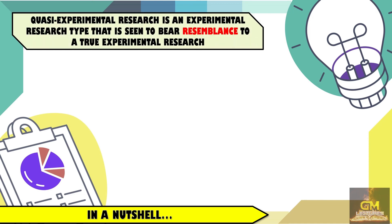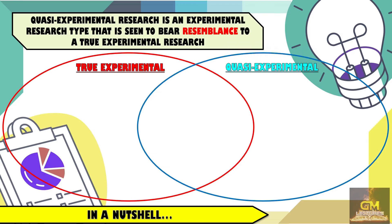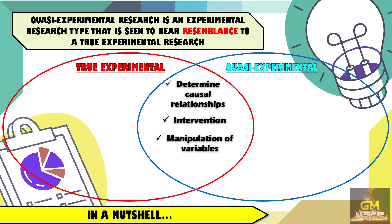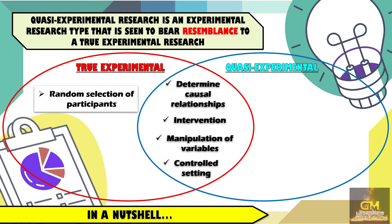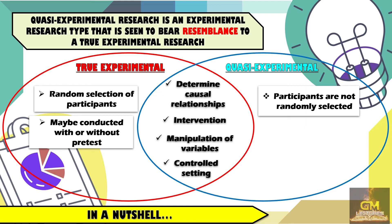In a nutshell, quasi-experimental research is an experimental research type that is seen to bear resemblance to a true experimental research. This means that both true experimental and quasi-experimental research are the same in that both aim to determine causal relationships. Also, both involve having the intervention of the researcher as well as manipulation of variables. It is also worth noting that both the true experimental research and quasi-experimental research are conducted in a controlled setting. In terms of the differences, true experimental research involves random selection of participants, while in quasi-experimental research, the participants are not randomly selected. Also, in true experimental research, it may be conducted with or without a pre-test, while quasi-experimental research involves pre-test and post-test.